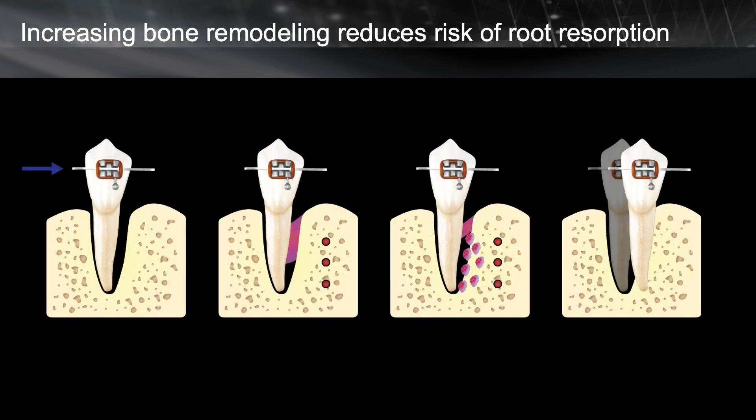On the other hand, when you have increasing bone remodeling and increasing numbers of osteoclasts, very soon the path of movement is clear. Therefore, the osteoclasts do not have enough time to attack the tooth. That's the reason in children we do not have as much root resorption — because bone density is less, the possibility that the tooth is pressed against the bone for a long time with prolonged necrotic tissue is less than in adults.